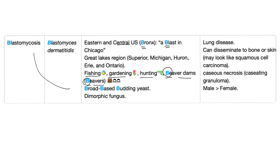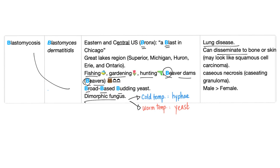It's described as broad-based budding yeast. It's a dimorphic fungus, which means it's mold in the cold, but yeast in the beast. It can cause lung disease, disseminate into bone or skin, and it can look like squamous cell carcinoma of the skin.